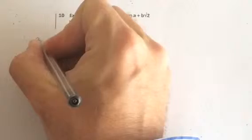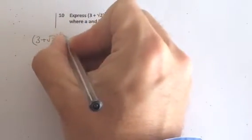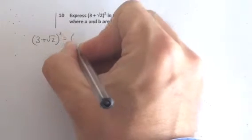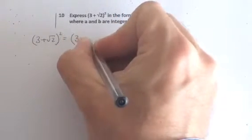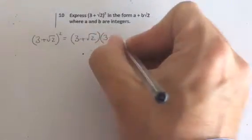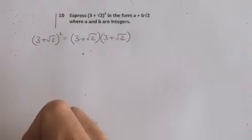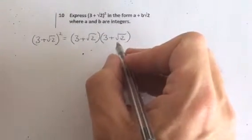So, (3 + √2)² - well squaring something means multiply it by itself. So let's write that as (3 + √2) times (3 + √2). OK, so here we've got to multiply one bracket by another.